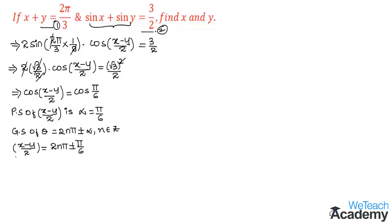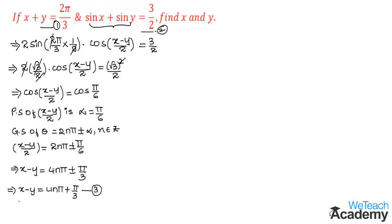Transferring 2 to the right-hand side, we get x minus y equal to 4nπ ± 2π/6, which becomes ± π/3. This gives two solutions: x minus y equals 4nπ plus π/3 (equation 3), and x minus y equals 4nπ minus π/3 (equation 4).